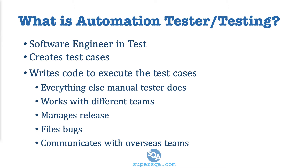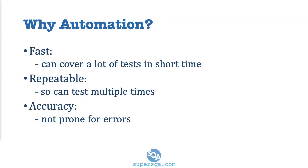If you are automating a test case, you have to have executed it manually first. You have to come up with the steps, do it manually, go over all the steps, then you can write automation for it. Everything else — filing bugs, dealing with releases, working with different teams, communicating with third parties and overseas — all of that is what an automation engineer would do.